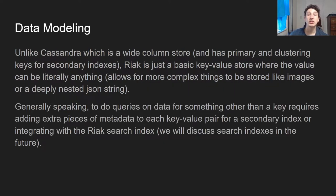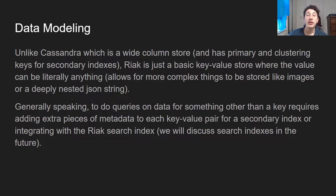In terms of data modeling, Cassandra is a wide column store, which means that you have this concept of a row key and then any amount of column keys attached to that which have values. You can also have this concept of clustering keys, which within a partition help determine the sort order. On the other hand, Riak is really just a key-value store, which means that all you really have is a key and some value where the value can basically be anything — a blob, JSON, a string, a number, or anything along those lines.